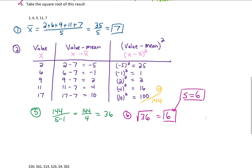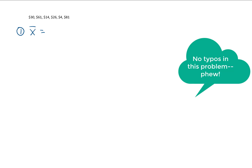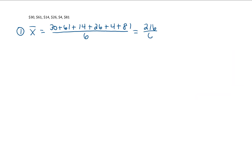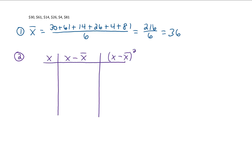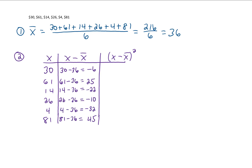Let's find the standard deviation of a second data set. Step 1 is finding the mean: adding up all the data values gives 216, and dividing by 6 gives a mean of 36. Now we create a chart. In the first column we put all of our data values, and in the second column we subtract the mean of 36 from each data value. In the third column we square each of those results.